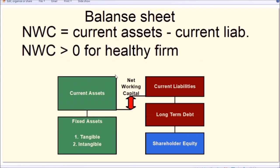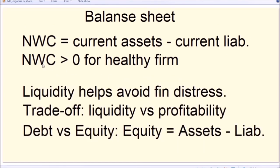Another important concept is net working capital, which is the difference between current assets and current liabilities. Net working capital should be positive for a healthy firm, because current liabilities represent debts the company must pay soon. If short-term assets do not exceed current liabilities, the company might experience financial difficulties when those liabilities come due. So a positive net working capital indicates the firm has sufficient liquidity to pay upcoming short-term obligations.